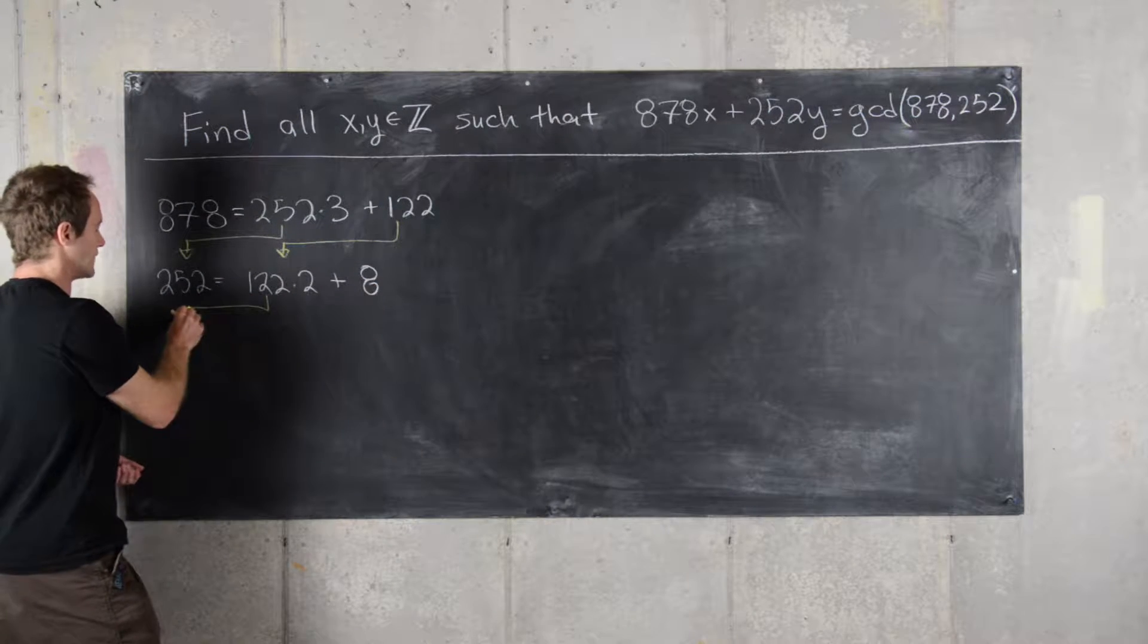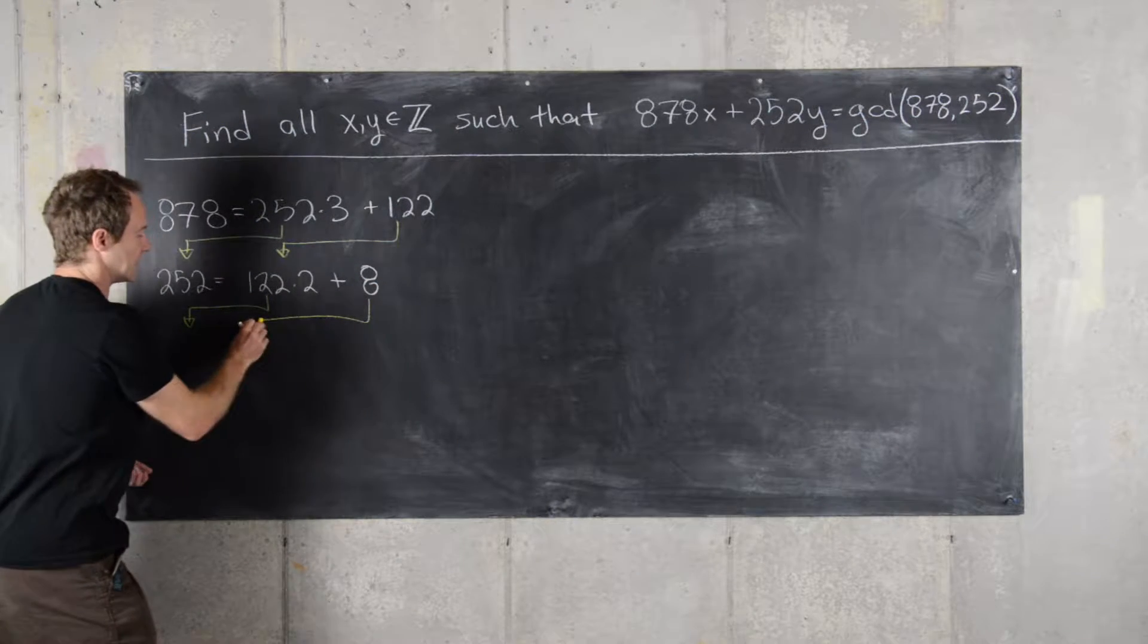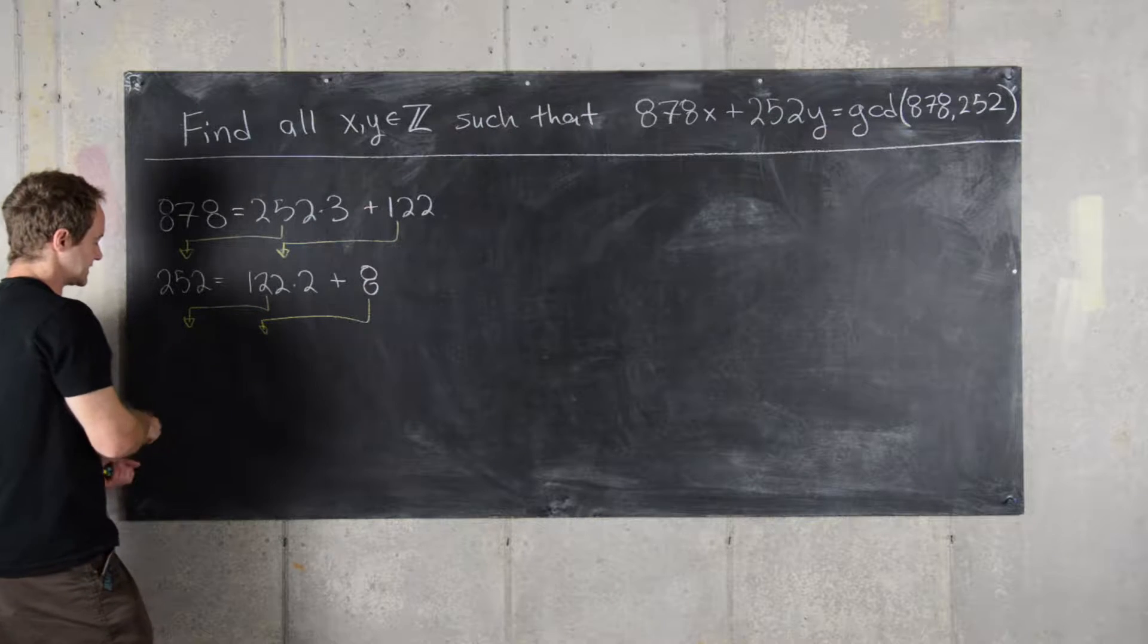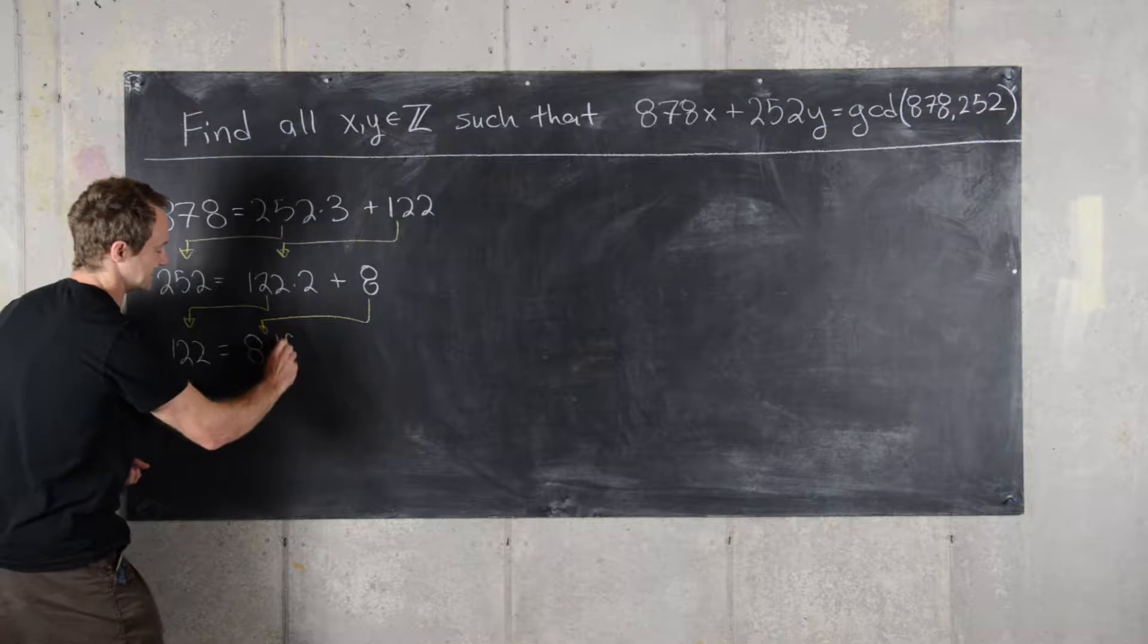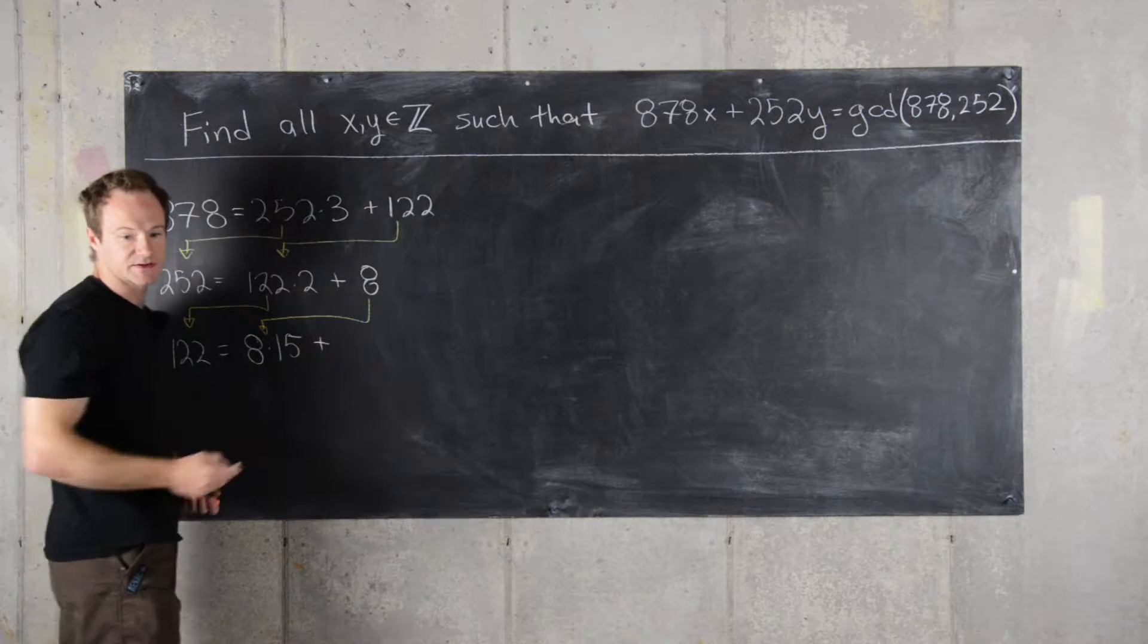Then we'll bring down 122 and 8 and we'll see that 122 equals 8 times 15 plus 2.